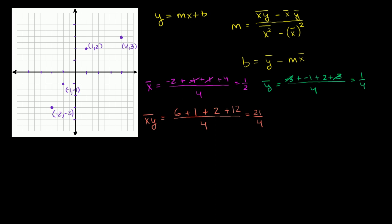And finally, we want the mean of the x squareds. That is going to be negative 2 squared, which is 4, plus negative 1 squared, which is 1, plus 1 squared, which is 1, plus 4 squared, which is 16 — all over 4. That's 4 plus 1 plus 1 plus 16 equals 22 over 4, which is the same thing as 11 over 2.